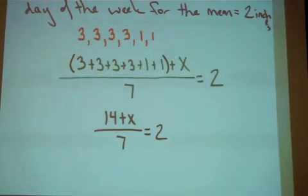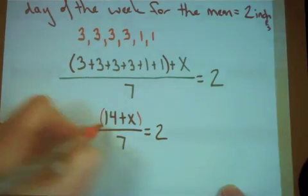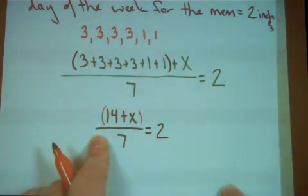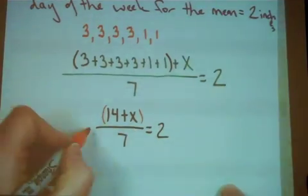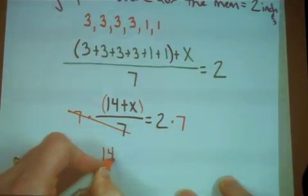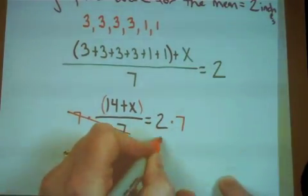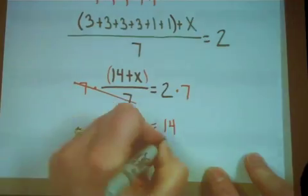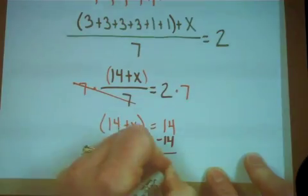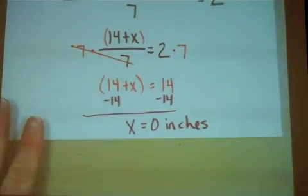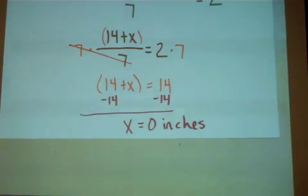What should we do next? There are implied parentheses here, so we want to get rid of this seven. The fraction bar means to divide, so to get rid of this division, we're going to multiply by seven — and whatever we do to one side of an equation, we do to the other. So we have fourteen plus x equal to two times seven, which is fourteen. Now the last thing I need to do is get x alone, which means I need to subtract fourteen from both sides. So on that last day of the week, we need it to be a clear day — or at least not a rainy day — in order to get an average for the week of two inches.